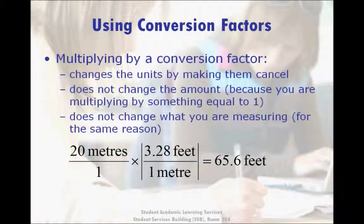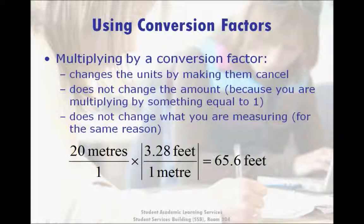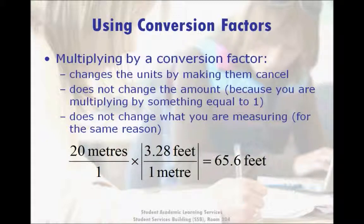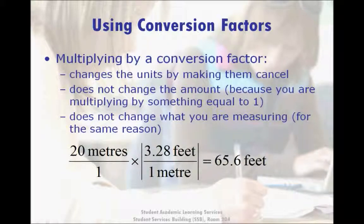You might be asking yourself, what's the point of all this? The point of using conversion factors is that by multiplying by a conversion factor, you can make one unit cancel while leaving another one behind. At the same time, you cannot change the actual quantity you began with because you are really only multiplying by one. In the example below, we start with 20 meters and multiply by the conversion factor that has meters on the bottom, so it cancels with the meters in the original amount. After the meters cancel, the only unit left is feet. Multiplying the numbers — 20 times 3.28 — gives the correct answer of 65.6 feet.